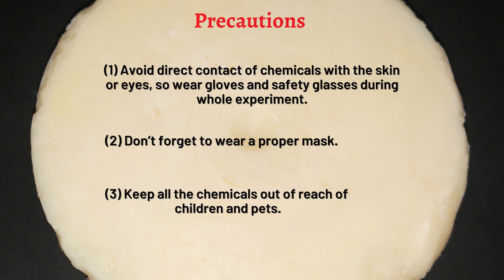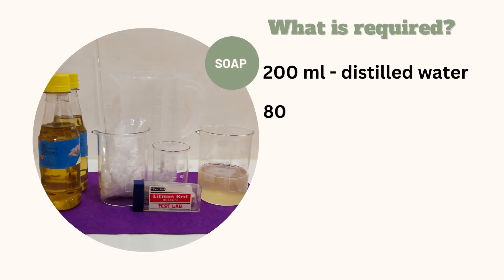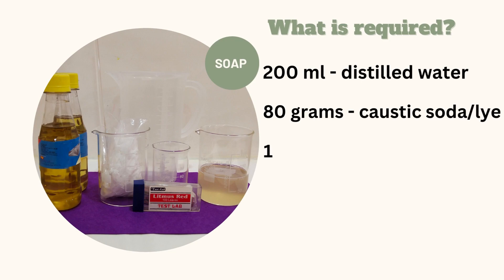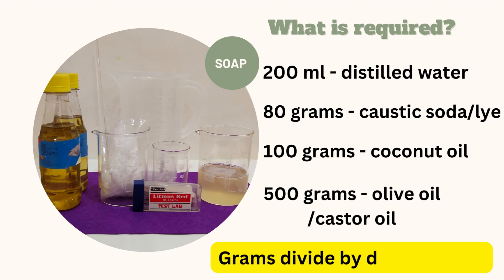Now let's start with the things we need before starting this process. I am going to use 200 ml of distilled water, 80 grams of caustic soda or lye, 100 grams of coconut oil, and 500 grams of olive oil or castor oil. You can convert grams of oil into milliliters by dividing the weight in grams by the density of that particular oil.